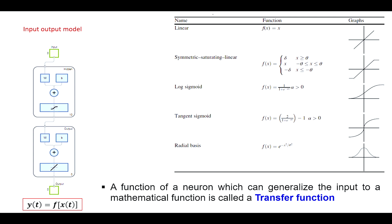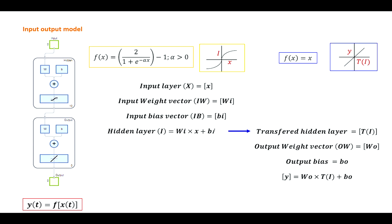Here the default transfer function in the hands-on session is tangent sigmoid, and I assume my rainfall-runoff relationship will also be tangent sigmoid. To derive i, I am going to use the transfer function. So i equals w times x plus b, where w is the weight and b is the bias. When we model a relationship, we will obtain these parameters called w and b in the hidden layer — the first box.